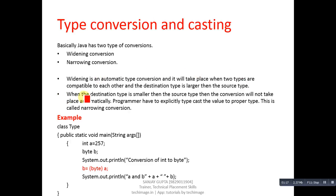When the destination type is smaller, if we have the data type at the left hand side of equals smaller as compared to the right hand side, then the conversion will not take place automatically. The programmer has to explicitly type cast the value to the proper type. This is called narrowing conversion.